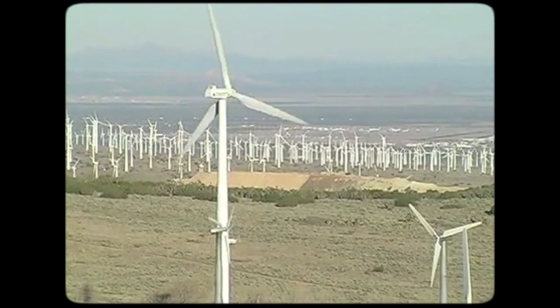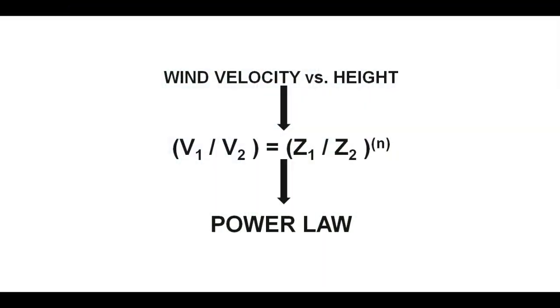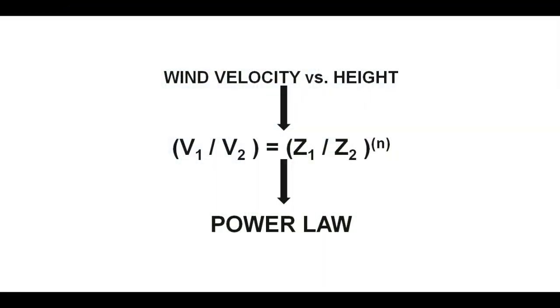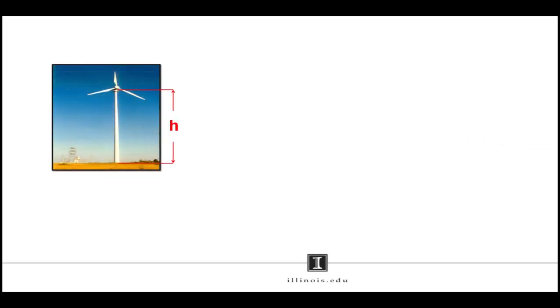The variation of wind velocities with height follows a power law of behavior. Also, the force exerted on a wind turbine and its supporting structure is proportional to the cube of the wind velocity.